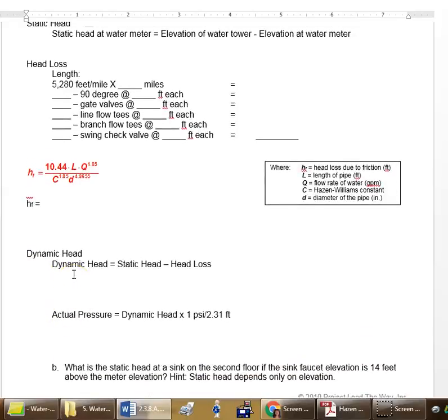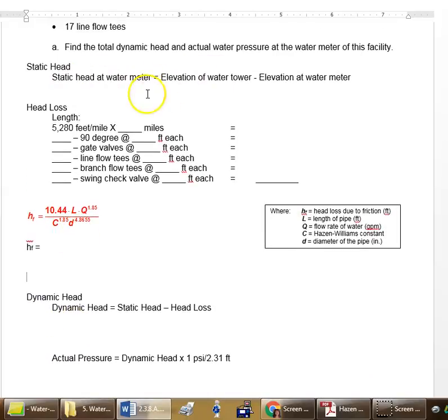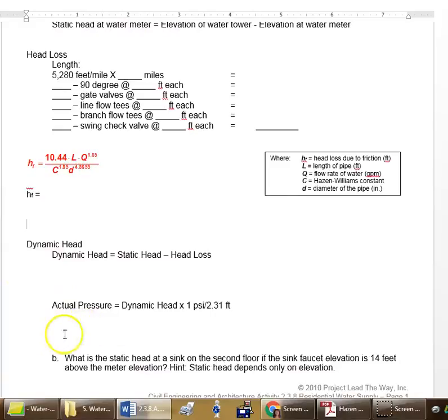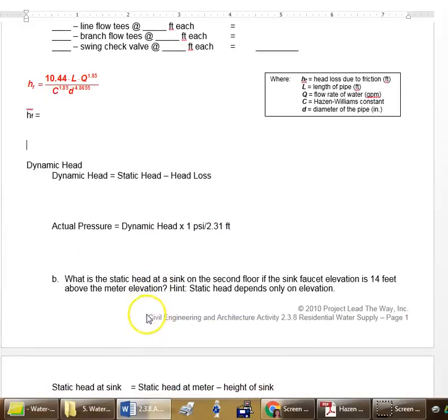Then you do your dynamic head. That's the static head you got here minus the head loss you got here to find the dynamic head. To find the actual pressure, you just take this dynamic head and multiply times this conversion factor to get the actual pressure. And then finally, we can now use this to answer our next question.